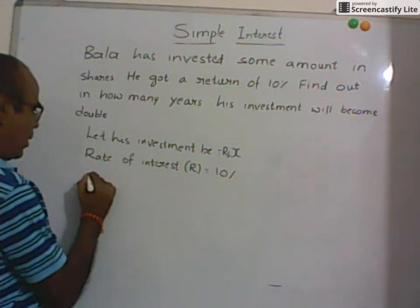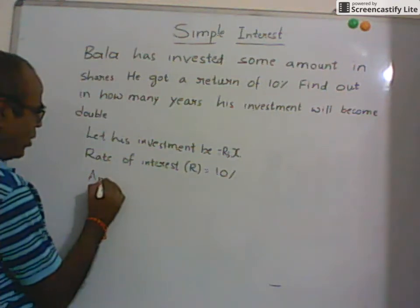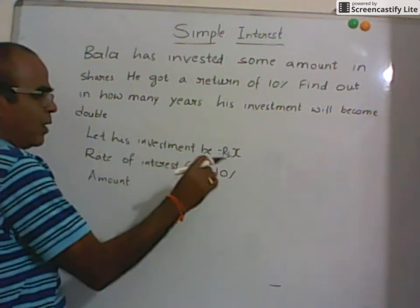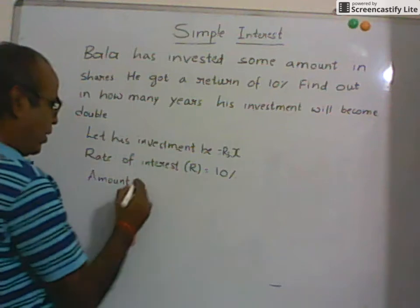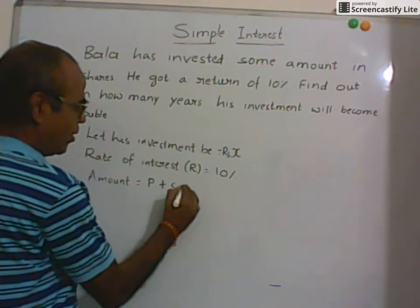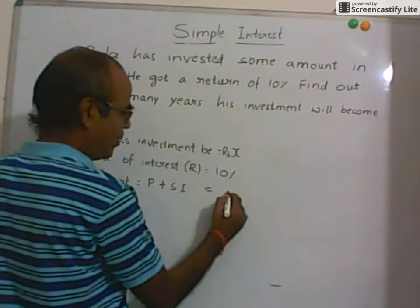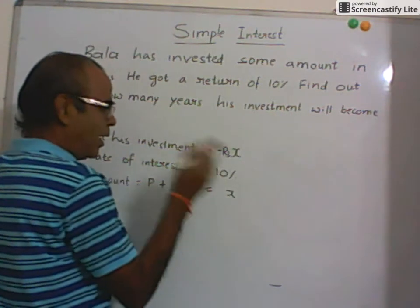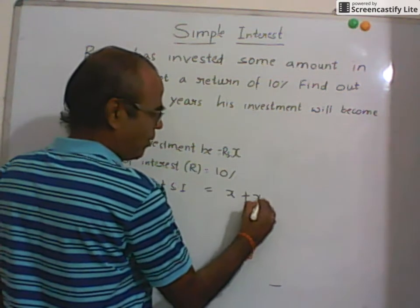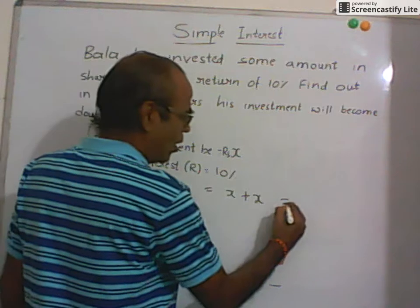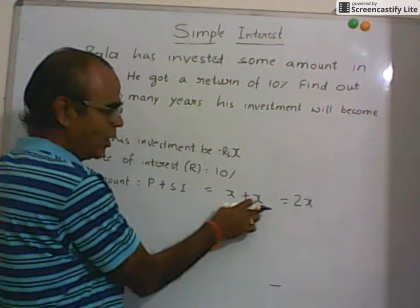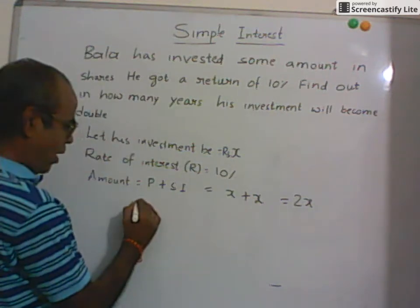Now we have to find out t. The amount is equal to double — that means whatever he has invested, the equal amount he got as interest. So amount is equal to P plus simple interest, which equals P plus X. Since P is X and he has to get an equal amount X as interest, this becomes 2X.